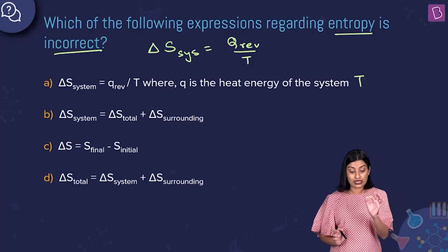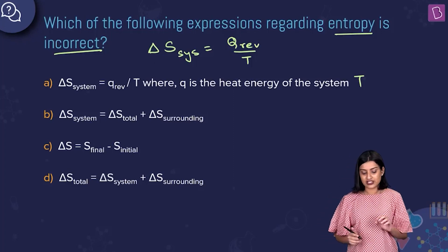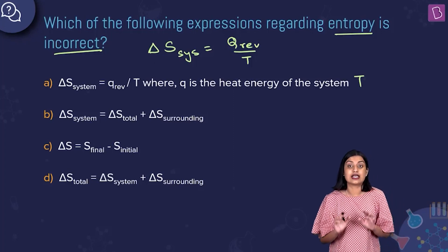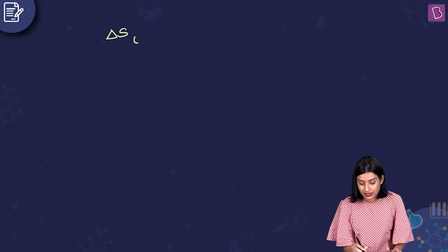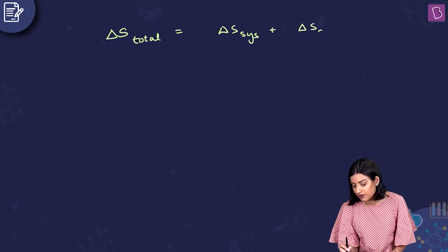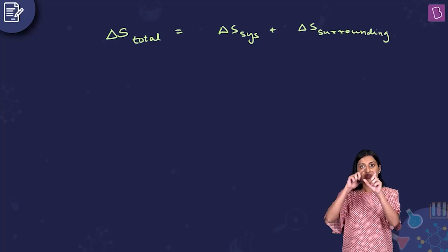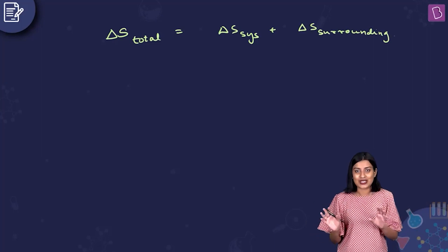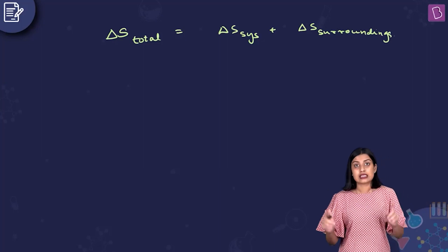Then we have option B, delta S of system is equal to delta S total plus delta S of surroundings. And option D is suggesting delta S total is equal to delta S system plus delta S surrounding. Both of these sound very similar, but there is a massive difference. What do we know? We know that delta S total or delta S of the universe is equal to delta S of the system plus delta S of the surroundings. That is how we define surrounding in thermodynamics. This is the correct expression.